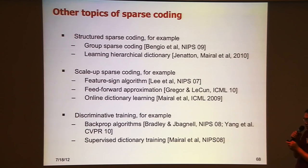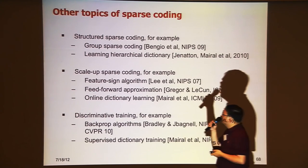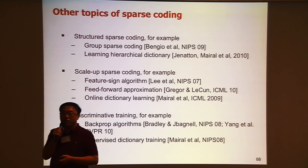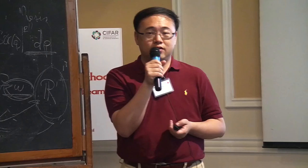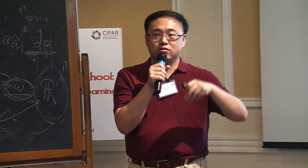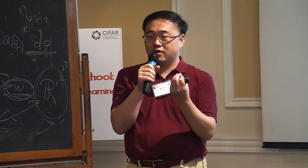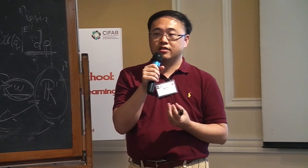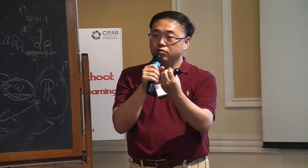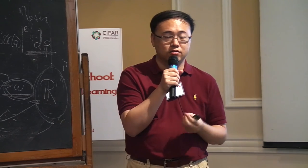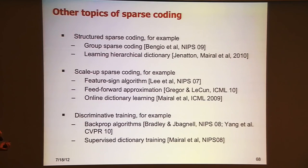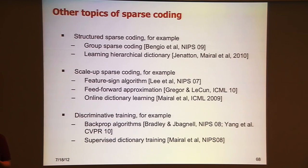There are many reasons to extend sparse coding. One direction is structured sparse coding — for example, group sparse coding done by Samy Bengio at Google and colleagues, which enforces spatial consistency: features in a local neighborhood in an image should have similar sparse responses. They enforce group sparsity for a group of local features in the neighborhood. Another work enforces a hierarchical structure in the dictionary, which may be better for learning a wide dictionary.